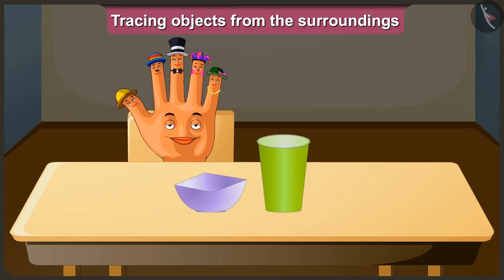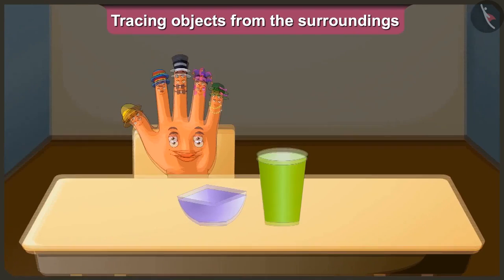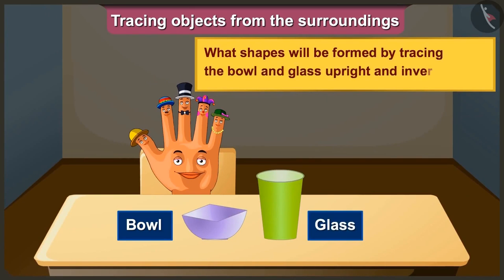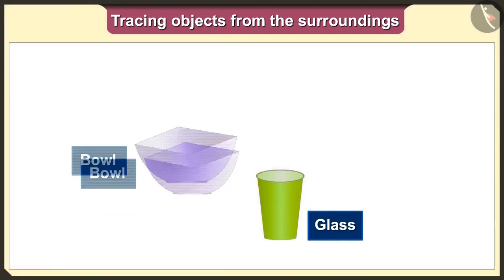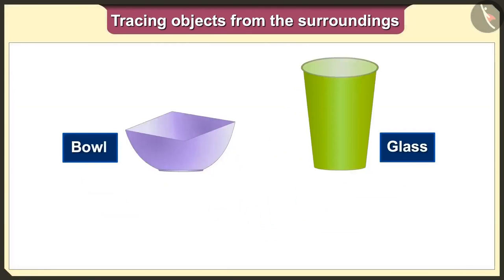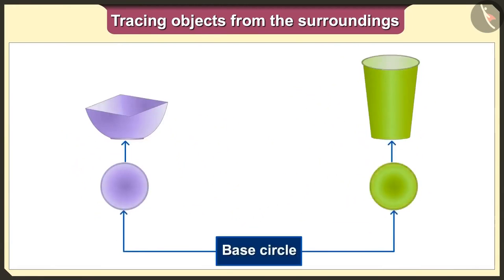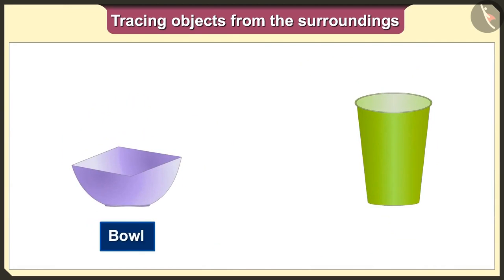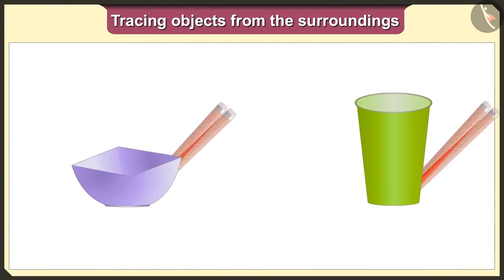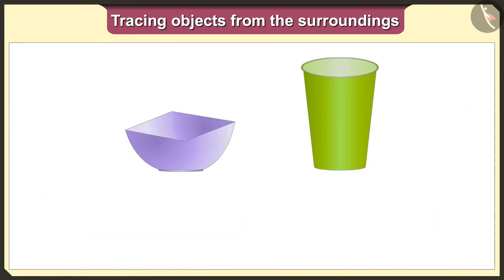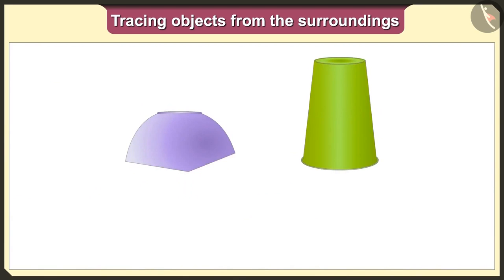Now let's look at another example. Which shapes would we get if we put this bowl and glass straight and upside down and then trace them? If we keep the bowl and glass straight like this, their base is a circle. So if we keep the bowl and glass upward and trace them, then we will get the circle shape. Now, if we keep the bowl and the glass upside down like this, then?